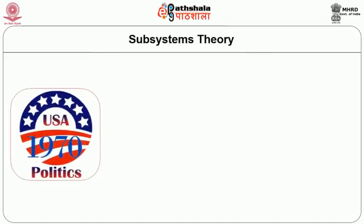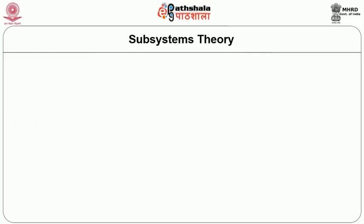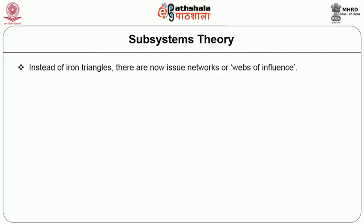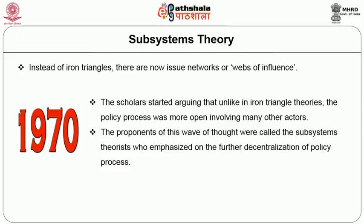Now, subsystems theory. Due to change in US politics during the 1970s — emergence of post-material values like politics of issues such as environment rather than mainly economic interest, the prevalence of protest, the questioning of authority, and the loss of certainty and optimism in solving policy problems — this fractured the consensus behind the power of producing groups and the practice of bureaucratic government, making the iron triangle irrelevant to explain these new circumstances emerging in policy process. Instead of iron triangles, there are now issue networks or webs of influence. Thus in the 1970s, scholars started arguing that unlike in iron triangle theories, the policy process was more open, involving many other actors. The proponents of this wave of thought were called the subsystems theorists, who emphasized on the further decentralization of policy process.